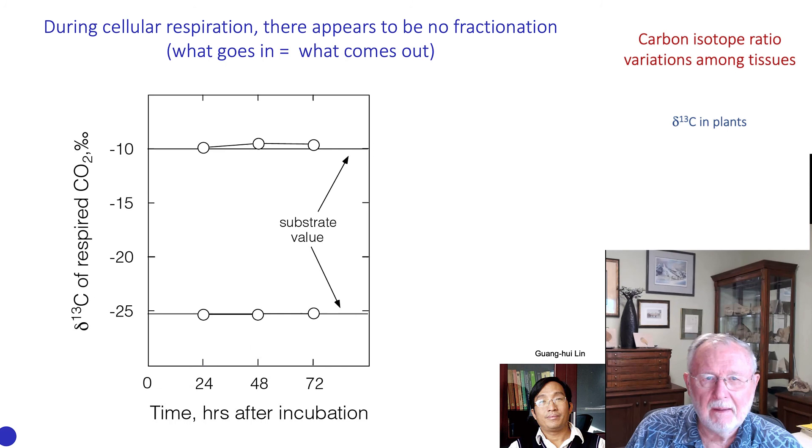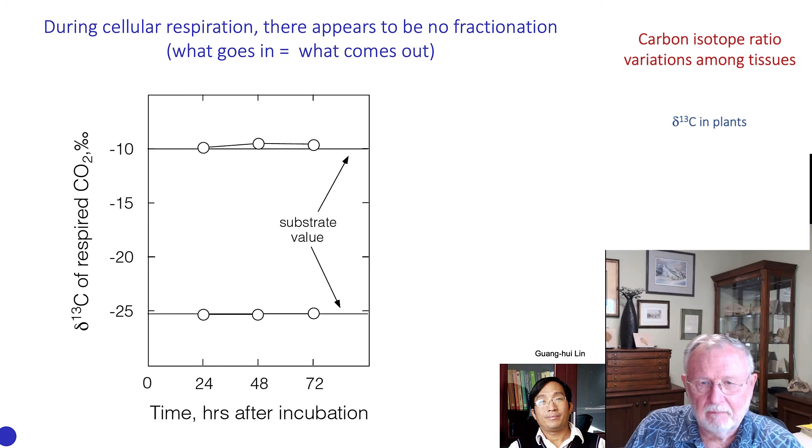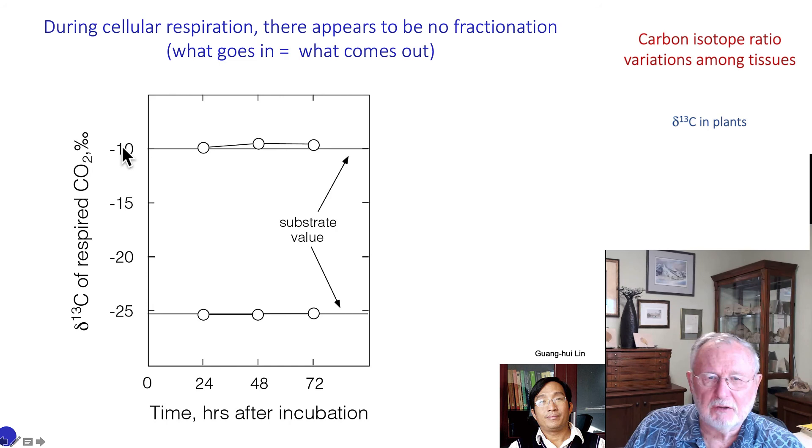Wung Wui Lin performed a very interesting experiment where he took bean cells, and these cells were ground up, and he fed them a C4 sugar or a C3 sugar, and then looked to see what the isotope ratio of CO2 coming off that cellular respiration was. And what he saw was, whether you looked at 24, 48, or 72-hour time intervals, that the isotope ratio of the flux was the same as the isotope ratio of the food source, indicating that there is no fractionation during metabolism.